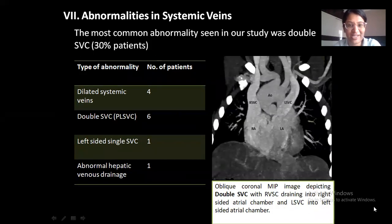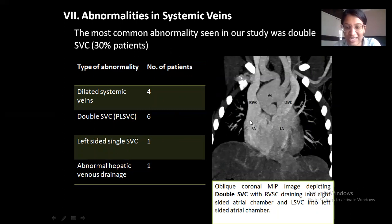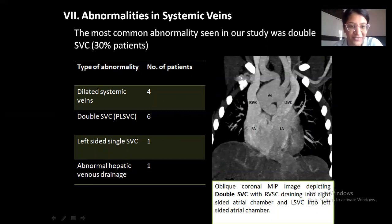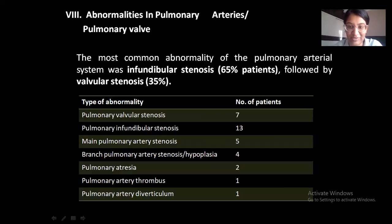Coming to abnormalities in systemic veins: the most common pattern of abnormality was double SVC in 30% of patients. This is an oblique coronal MIP image depicting the double SVC, with the right-sided superior vena cava draining into the right-sided atrial chamber and the left-sided superior vena cava draining into the left-sided chamber. Other abnormalities noted were dilated systemic veins in four patients, left-sided single SVC in one patient, and abnormal hepatic venous drainage in one patient.